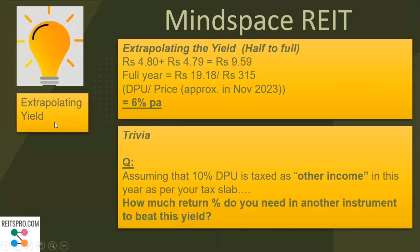The Mindspace REIT debt is 20% LTV at a cost of debt of 7.8%, with a mix of fixed and floating rate debt. The NAV works out to Rs 370, with the fair value of assets and the calculation shown on screen. Extrapolating the yield: Q1 DPU was Rs 4.80 and then Rs 4.79 — so Rs 9.59 for half-year. Annualising: Rs 19.18 divided by Rs 315 gives approximately 6% yield. Since only 10% of the DPU is taxable, the effective yield compared to a fully taxable instrument like an FD would be higher than the visible 6%.